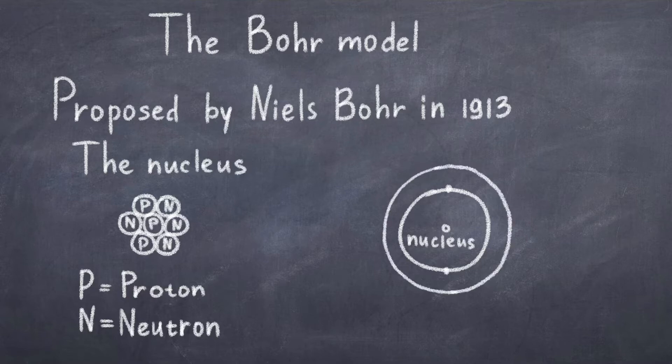The uncertainty principle of course tells us that this is impossible, because we can't measure the orbit that precise. Nevertheless, the Bohr model came before the uncertainty principle, and the electrons approximately follow these discrete shells.